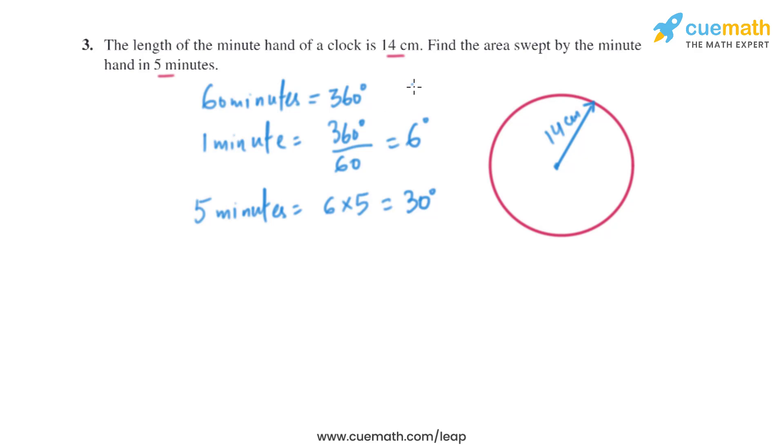The length of the minute hand of a clock is given, that is 14 centimeters. So this is basically the radius of the circle. In 5 minutes it will sweep this much of area, the one in the red. We have to find the area of the one in the red, which is basically the area of the sector.